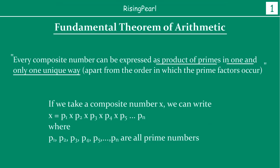In the last webisode, we took a detailed look at what we mean by the fundamental theorem of arithmetic. So in a nutshell, what the fundamental theorem of arithmetic states is this: every composite number can be expressed as a product of primes in one and only one unique way, if we do not consider the order in which the prime numbers appear.